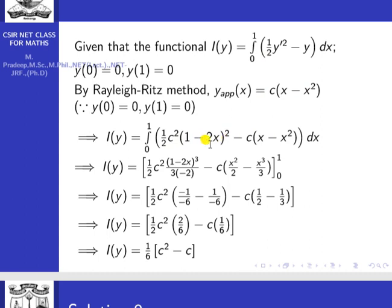Integrating: ½ c²·[(1−2x)³/(3·(−2))] minus c·[x²/2 − x³/3] evaluated from 0 to 1. The upper limit gives ½ c²·(−1/6) minus c·(1/2 − 1/3). Simplifying: 1/2 − 1/3 = 1/6, so i[y] = (1/6)·c²·(1/2) − c/6, which gives i[y] = (1/6)(c² − c).